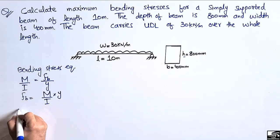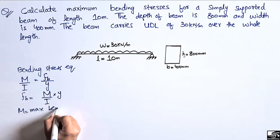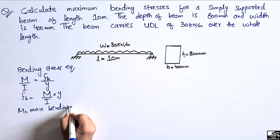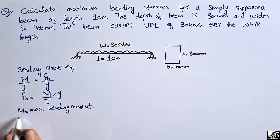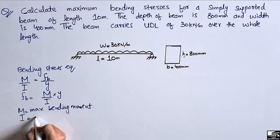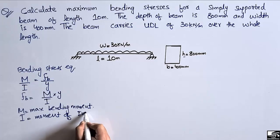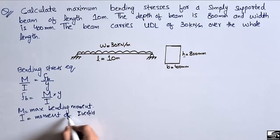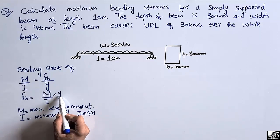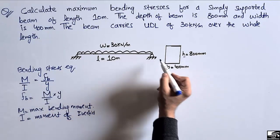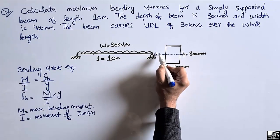So M is the maximum bending moment, which we need to find for this beam. I is the moment of inertia for this beam. The cross-section of the beam is given, so we can easily find the moment of inertia.